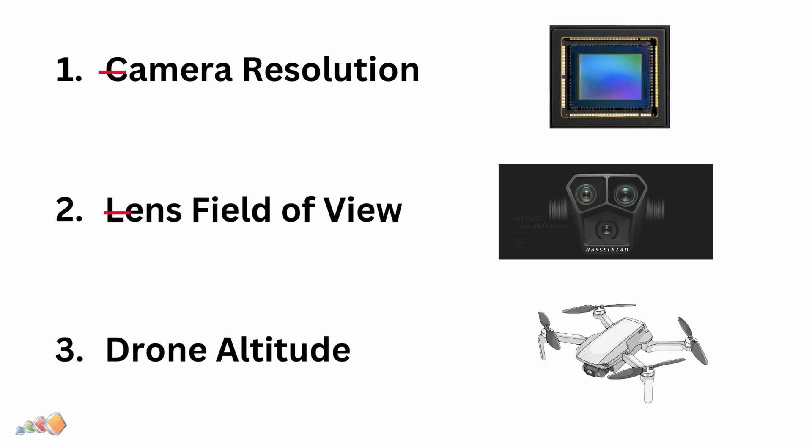With most drones, the sensor size and field of view are fixed, which means the only real way to change the GSD is to change the altitude. So if a lower GSD has more detail, why not always just fly lower and produce a higher quality image?